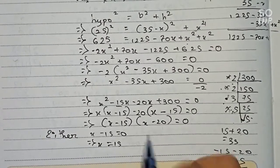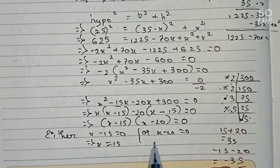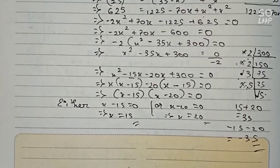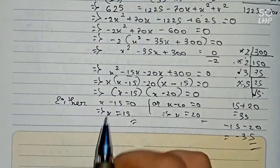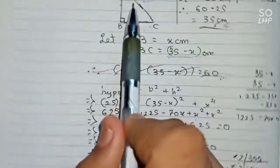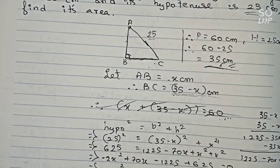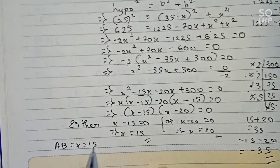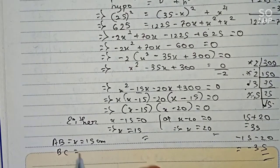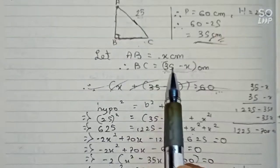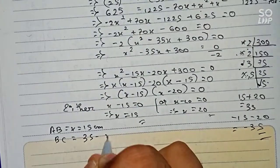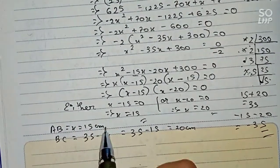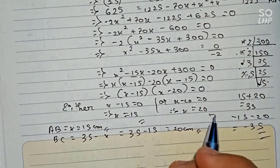Therefore either x minus 15 equals 0, giving x equals 15, or x minus 20 equals 0, giving x equals 20. Taking x as 15: AB equals x equals 15 cm, and BC equals 35 minus x equals 35 minus 15 equals 20 cm.